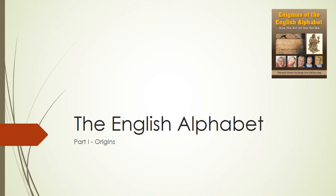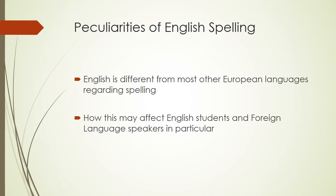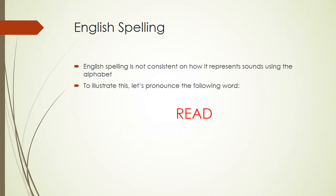Let's take a look at the evolution of English spelling and how it can affect students in general. In part one we will review the origins of spelling. English is different from most other European languages regarding spelling. English spelling is not consistent on how it represents sounds using the alphabet.